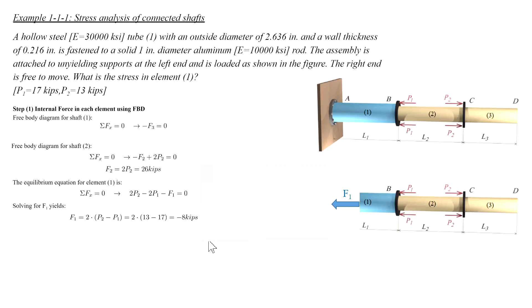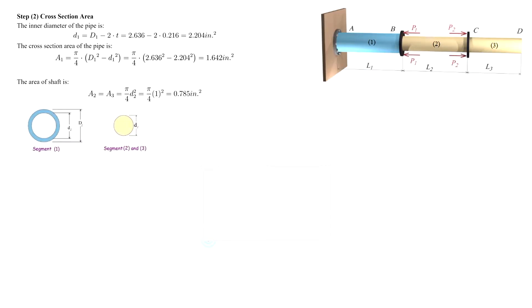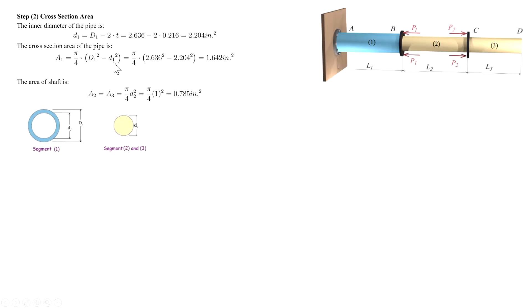The second step is determining the cross-section area. Segments 2 and 3 are solid shafts, so the area is a circle: pi over 4 times diameter squared. Segment 1 is a tube. To determine its area, we subtract the area of the inner circle from the area of the outer circle, giving pi over 4 times the quantity of external diameter squared minus internal diameter squared.